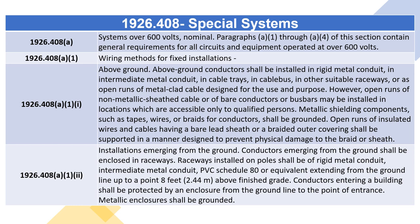1926.408(A)(1)(ii) — Installations Emerging from the Ground. Conductors emerging from the ground shall be enclosed in raceways. Raceways installed on poles shall be of rigid metal conduit, intermediate metal conduit, PVC schedule 80 or equivalent, extending from the ground line up to 0.8 feet (2.44 meters) above finished grade. Conductors entering a building shall be protected by an enclosure from the ground line to the point of entrance.